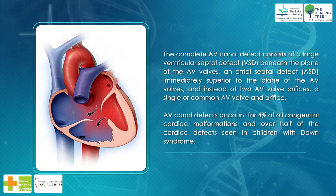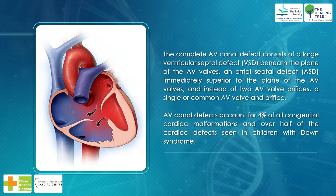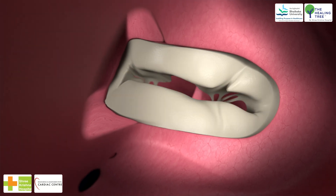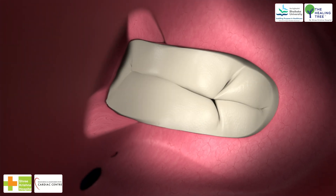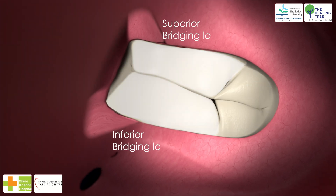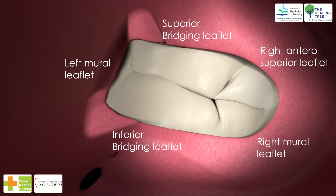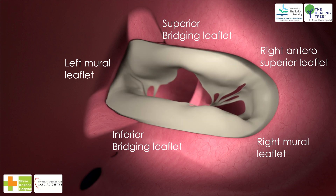AV canal defects account for over half of the cardiac defects seen in children with Down syndrome. In almost every form, the common atrioventricular valve is composed of five leaflets, of which only the superior and inferior bridging leaflets are found within both the left and right ventricles, whereas the left mural leaflet is confined to the left ventricle.